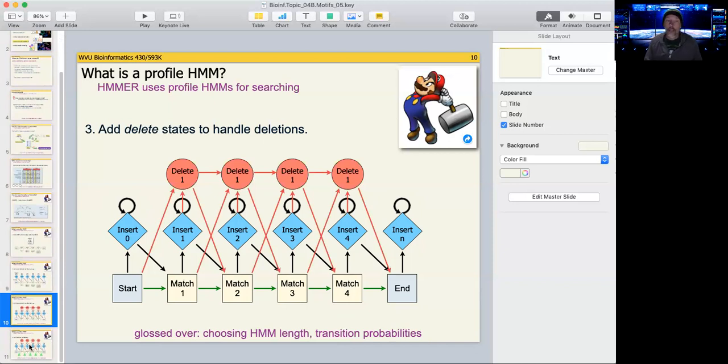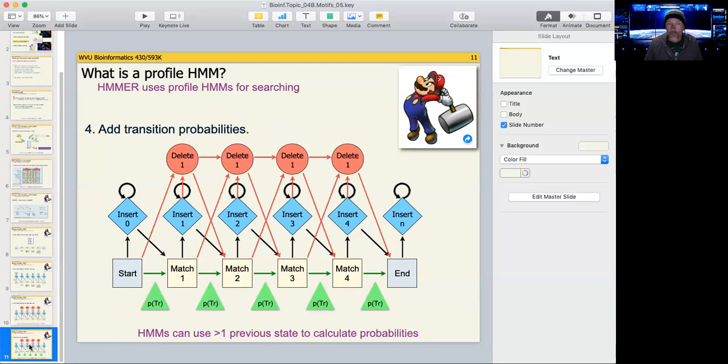The final part of this puzzle and arguably makes profile HMM so powerful is the concept of transitions. So you can calculate a transition probability. A probability that when you have a particular position, when you have a particular residue in a position, the probability that that residue transitions to another residue. So for example,